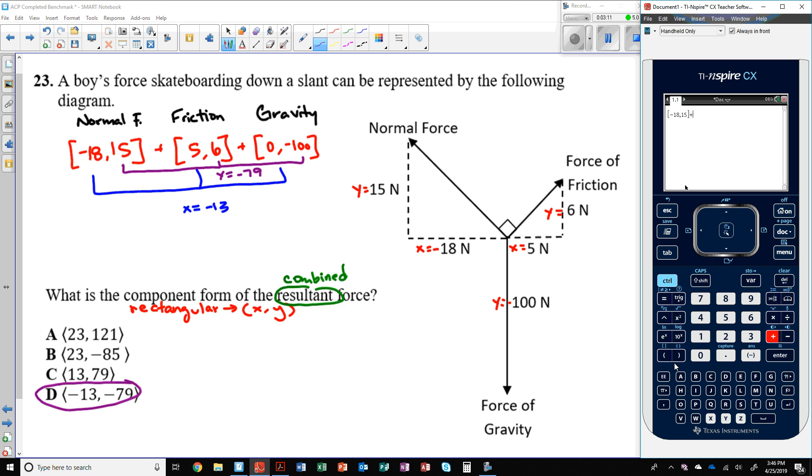comma 15. And then we go outside and we add. So we're now going to do another bracket: 5 comma 6. And then one more bracket: 0 comma negative 100. Let's check if we did our math correct. We press enter. And yes, negative 13 comma